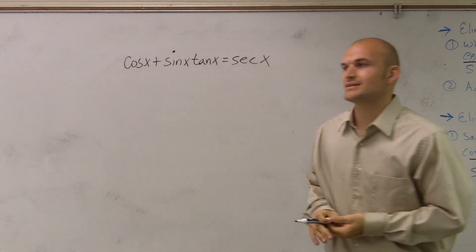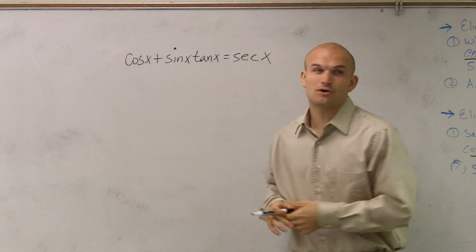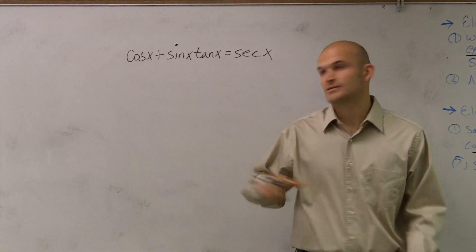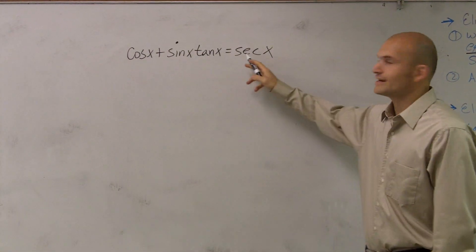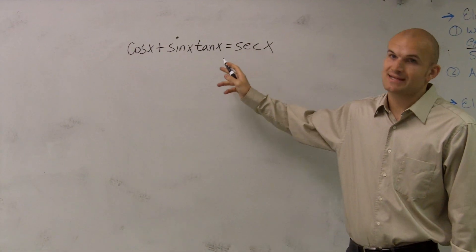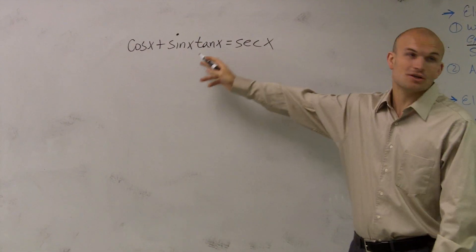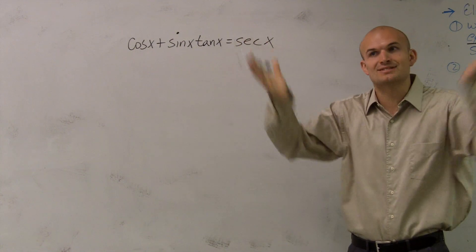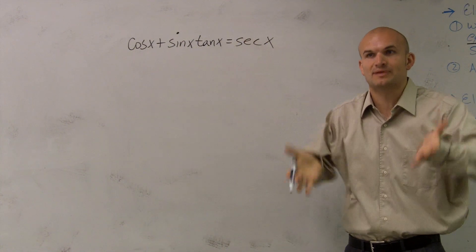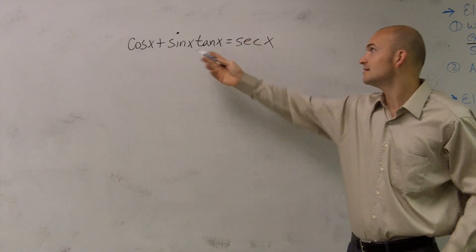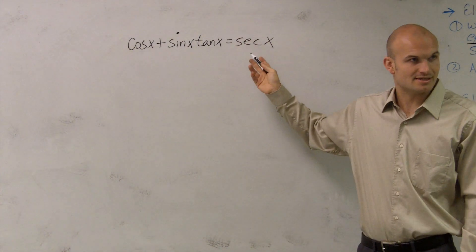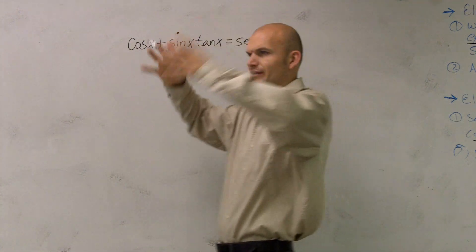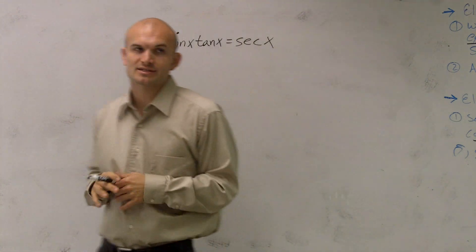One of the quick rules you want to follow is always try to do the most complicated side first. We're not going to want to try to expand secant to make it look like this. It's easier to simplify a complicated side to make it look like secant, rather than to try to work backwards and expand.